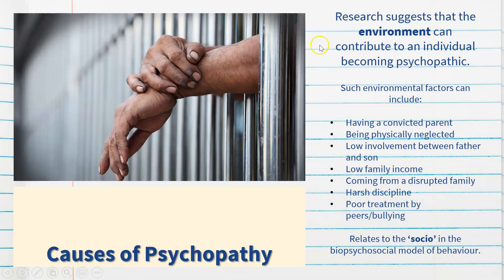Not only are there biological factors, but there are also environmental factors that can contribute to an individual becoming psychopathic. Such environmental factors can include having a convicted parent, being physically neglected in childhood especially in the first two to five years of life, low involvement between father and son, low family income, coming from a disrupted family with abuse or neglect, very harsh discipline style, and poor treatment by peers or experiencing bullying in primary or high school. This relates to the socio part of the biopsychosocial model of behavior.